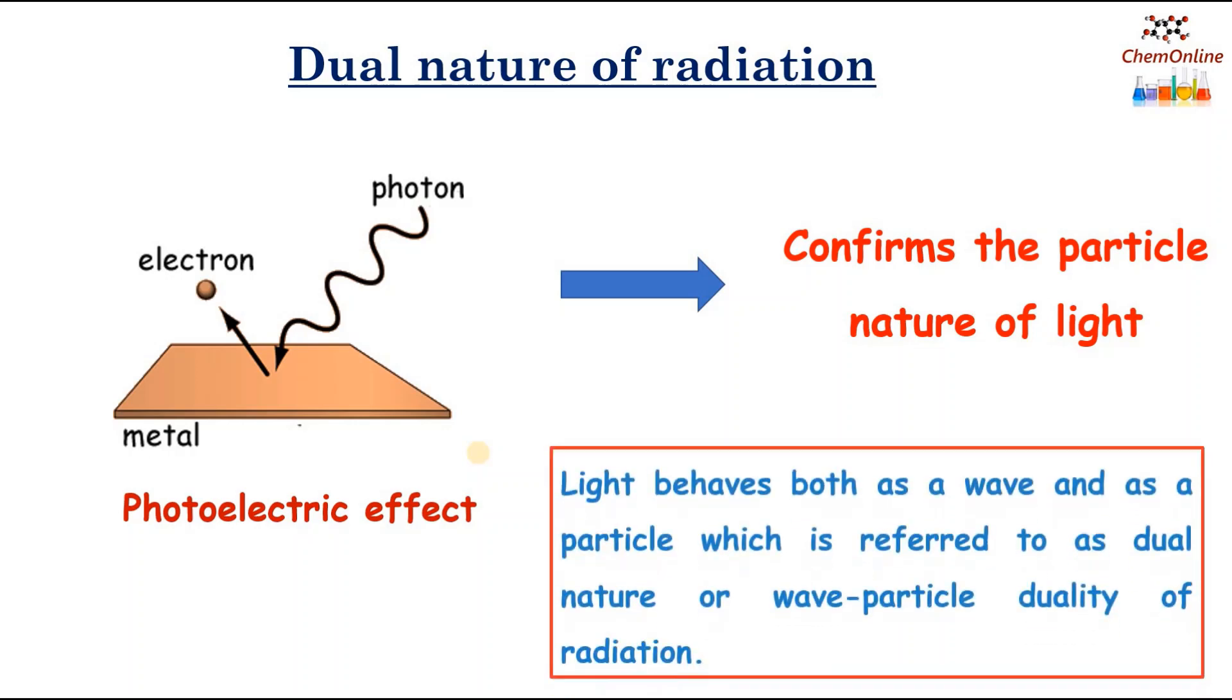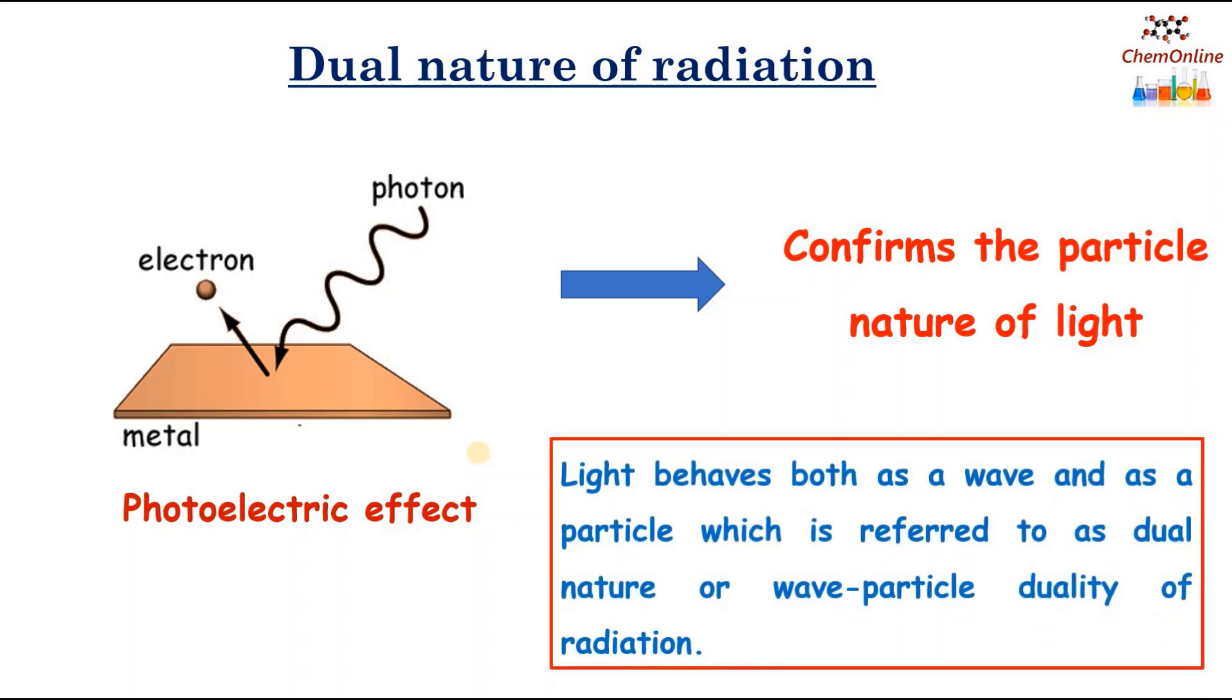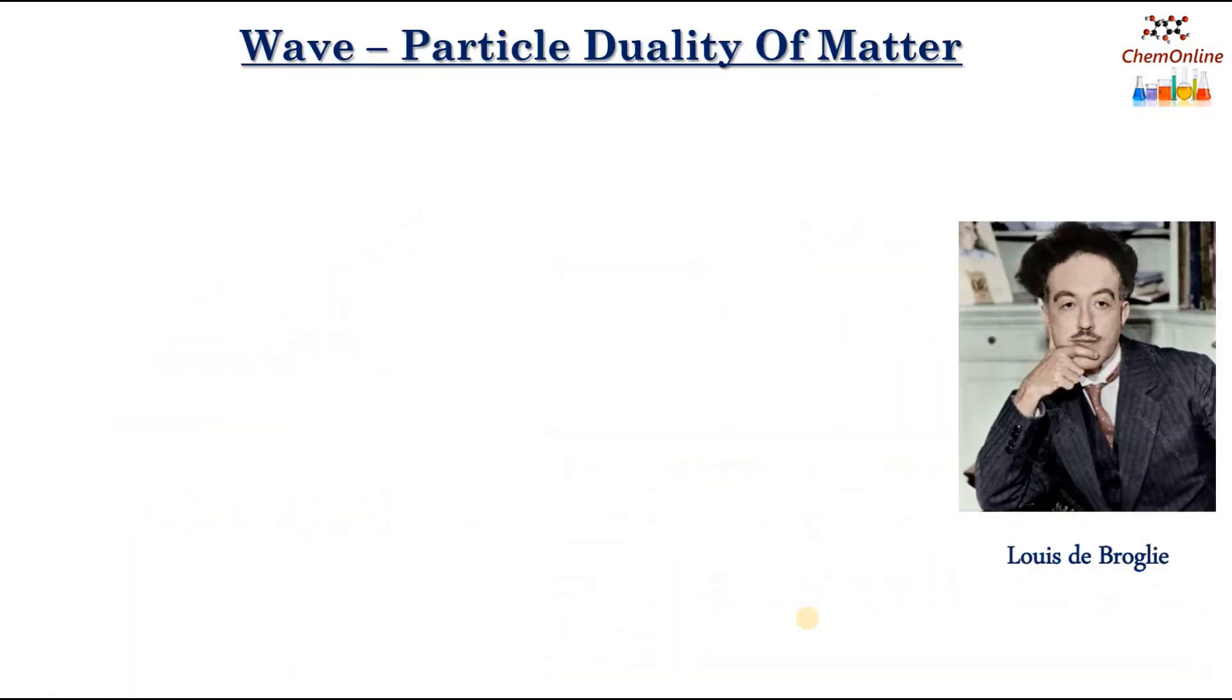So, that means, light behaves both as a wave and as a particle, which is referred to as the dual nature or wave particle duality of radiation. Now, let's see what is meant by the wave particle duality of matter.